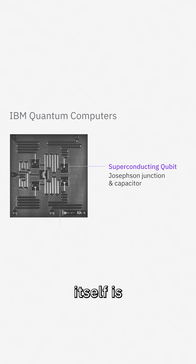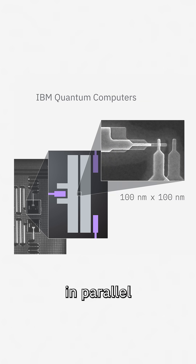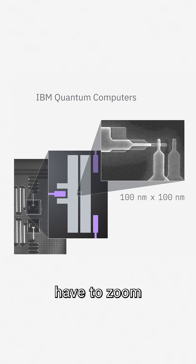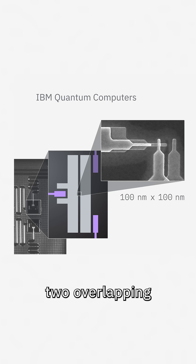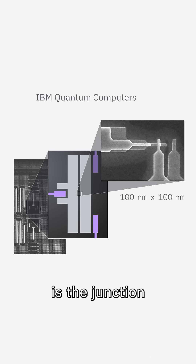The transmon itself is a capacitor, and it consists of two plates of metal hooked up in parallel with a non-linear inductor called the Josephson Junction. But to see the Josephson Junction, you actually have to zoom in even more. It's created from two overlapping layers of superconducting metal, and where the two pieces overlap and touch is the junction.